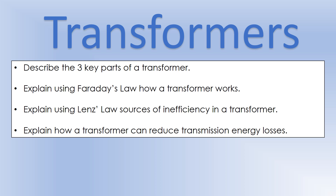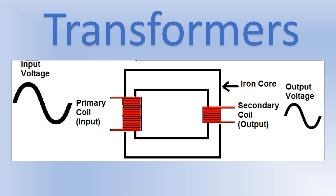If you haven't watched my previous video looking at induction, I highly recommend looking at that before this one. The basic setup of a transformer has an iron core, which is sometimes made up of two C-shaped cores put together. On the left you have a coil of wire connected to an AC power source — that's the primary coil — and on the right you have another coil connected to a circuit or voltmeter — that's the secondary coil.